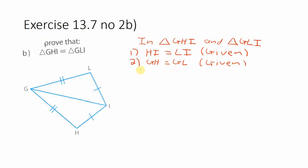So the third portion of our body, we can see that GI and GI is the same because it's a common side. So it is common to both triangles. So GI equals GI, reason being it is common.